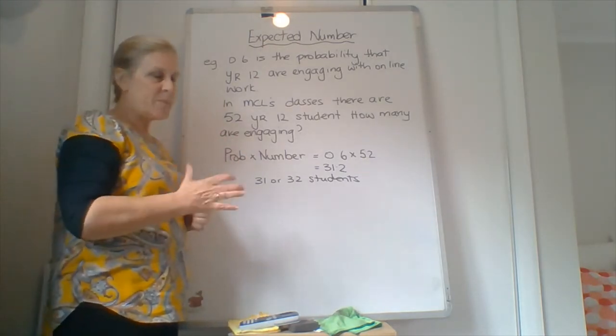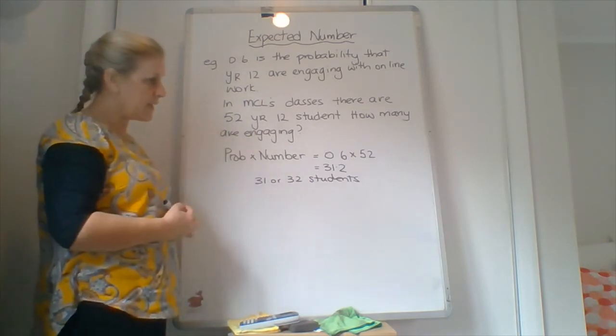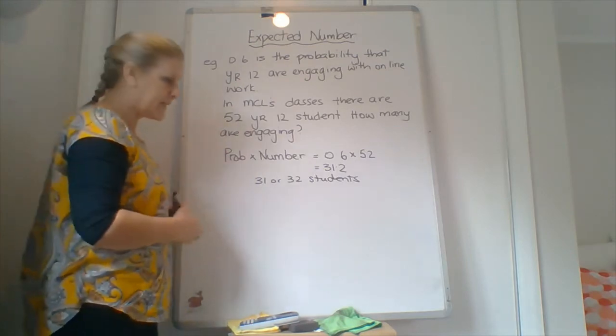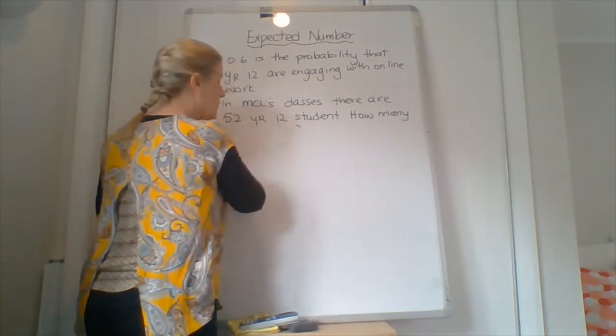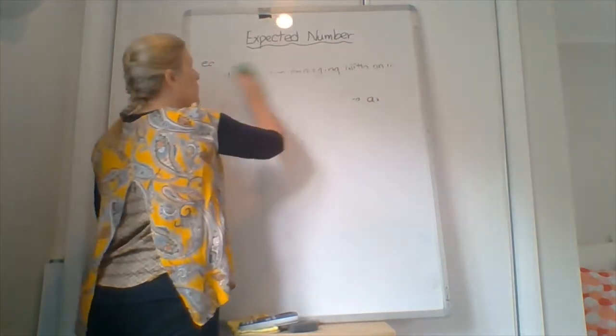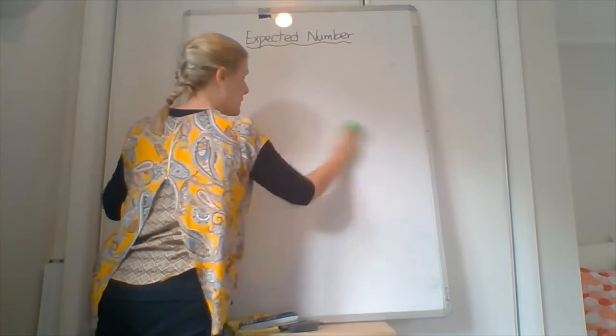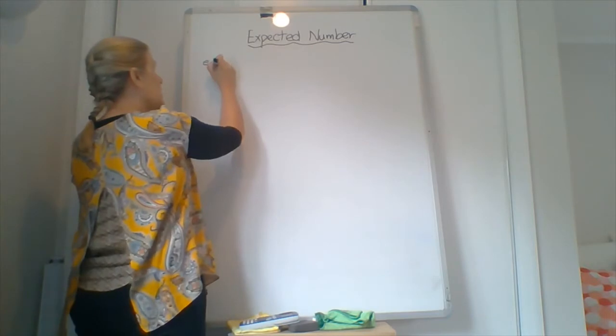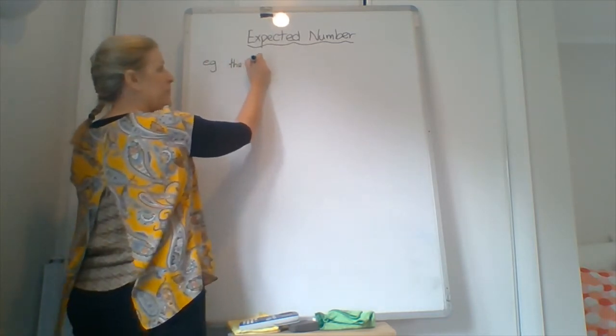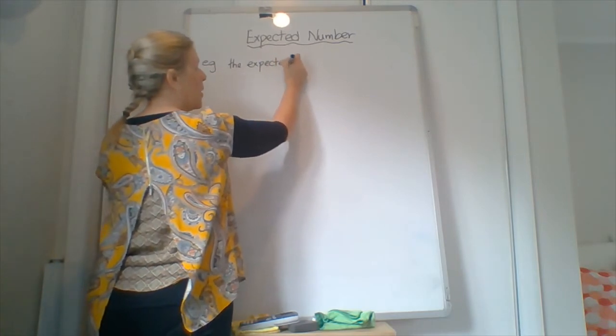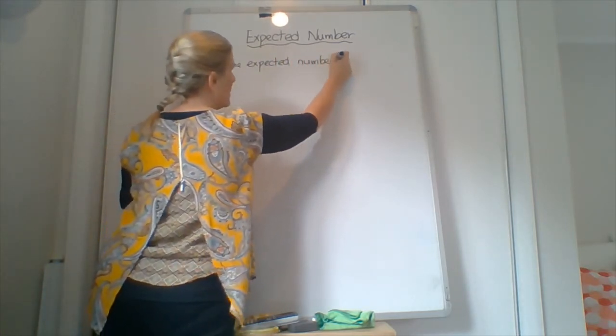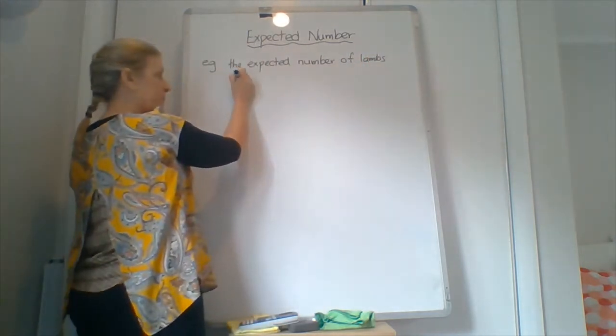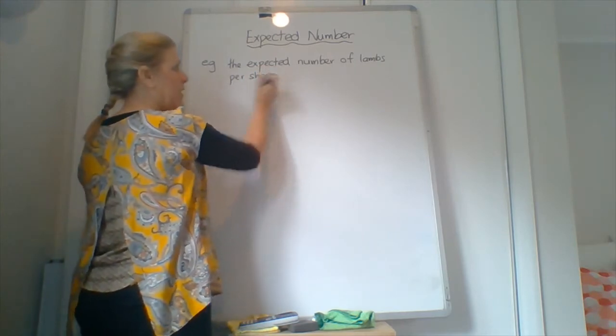Which believe it or not is around about right. So that's one type of question we can have. You need to pause and copy that one down now because I'm going on to the second type of question. So the second type of question is where we have different things. So the one in the book I'm going to do, which is the expected number of lambs per sheep.